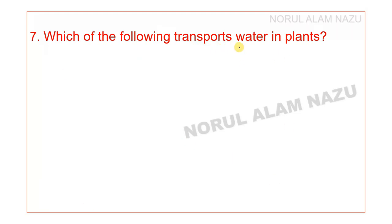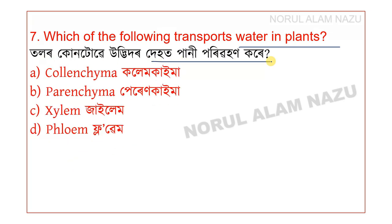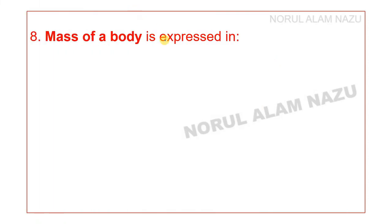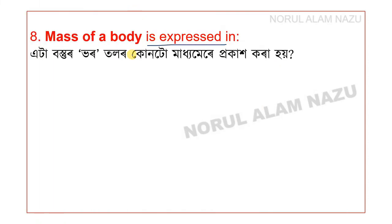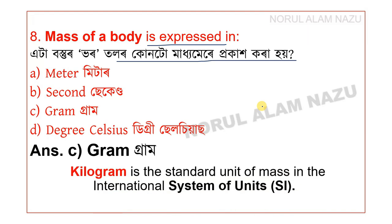Which of the following transports water in plants? The mass of the body is expressed in kilograms. Kilogram is the standard unit of mass in the international system of units.